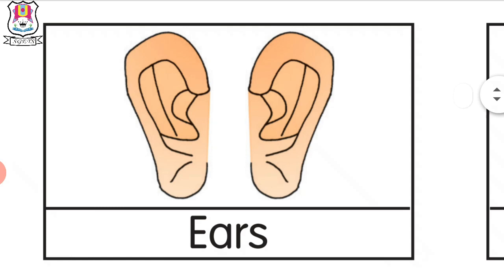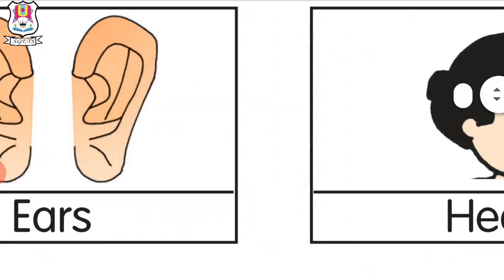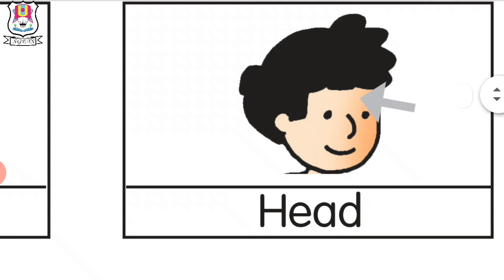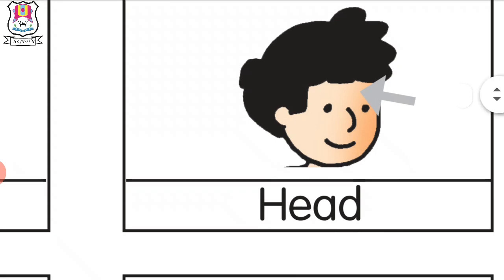How many ears do we have? Ears. Head. Girls use the ears, boys use the ears. What is this? This is our eyes. Under the eyes — it is called head.